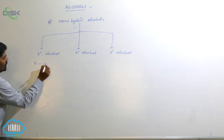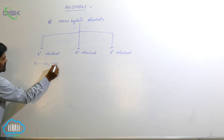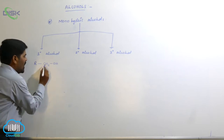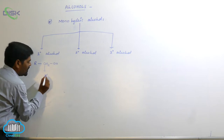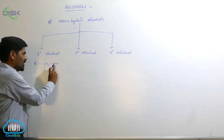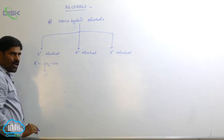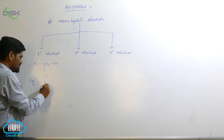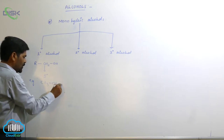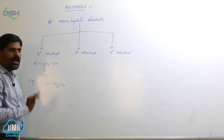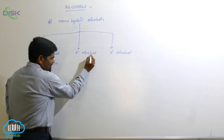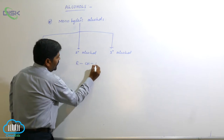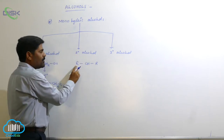For primary alcohol, the hydroxyl group is attached to a primary carbon. A primary carbon is the carbon which is connected to only one other carbon. This carbon connected to the OH group is known as primary carbon, and therefore the alcohol is known as primary alcohol. A better example for primary alcohol is CH3-CH2-OH, which is ethyl alcohol.